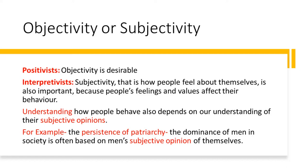This is where you should be able to link objectivity or subjectivity to the theoretical approaches. For instance, the positivists believe that objectivity is highly desirable — we should look at facts and our conclusions or judgements must be based on facts. But we also have the interpretivists, who believe that subjectivity — that is, how people feel about themselves or about others — is also important, because people's feelings and values affect their behaviour, and we should understand that.